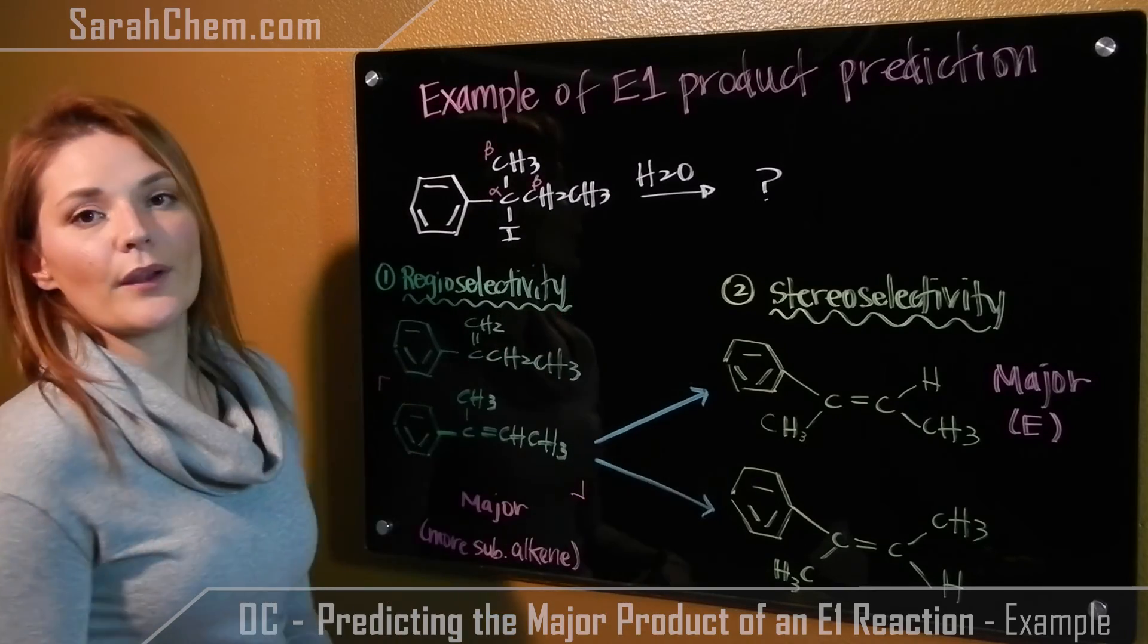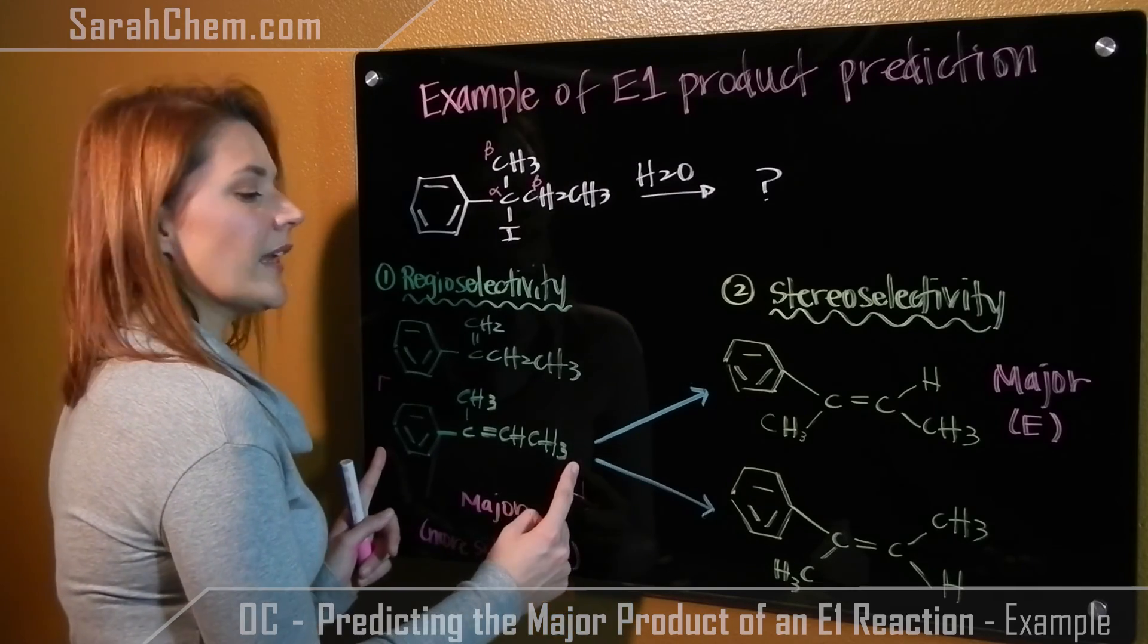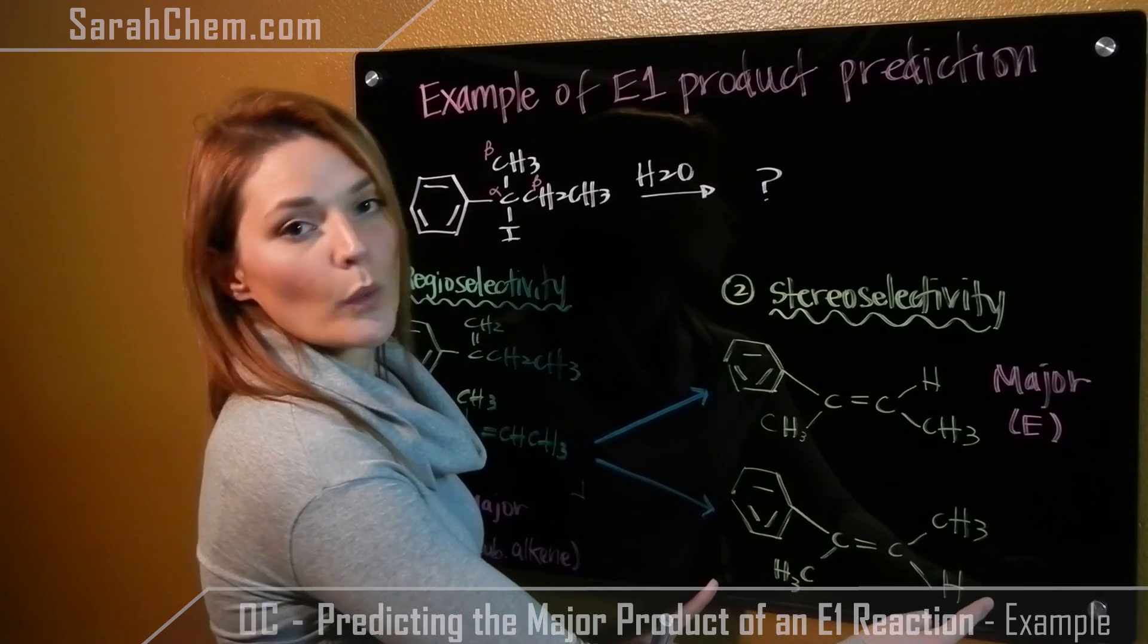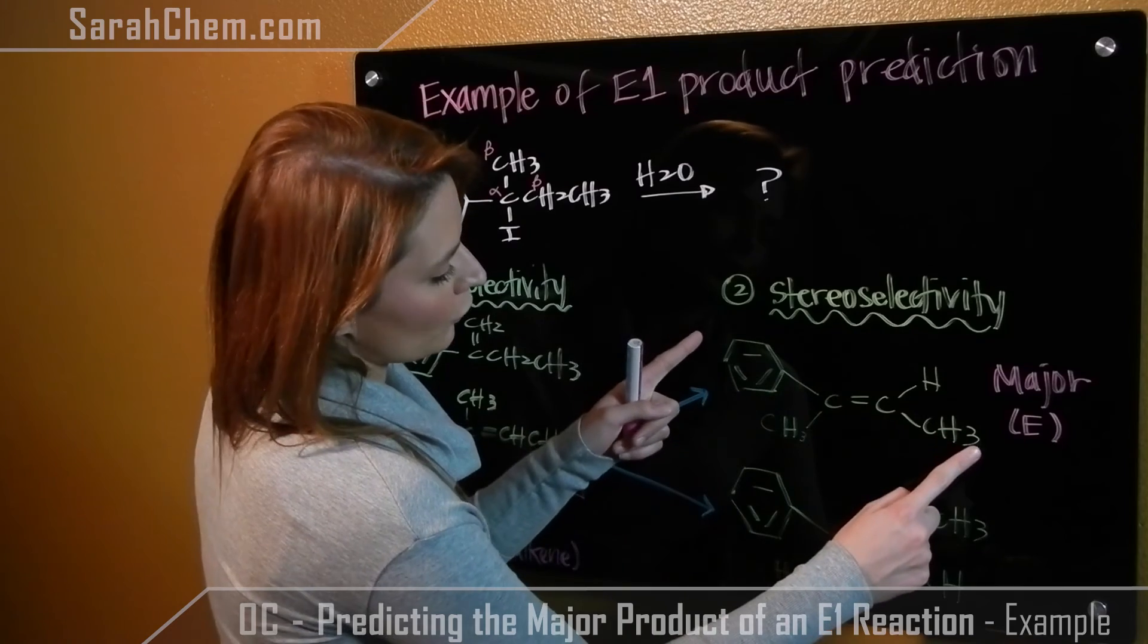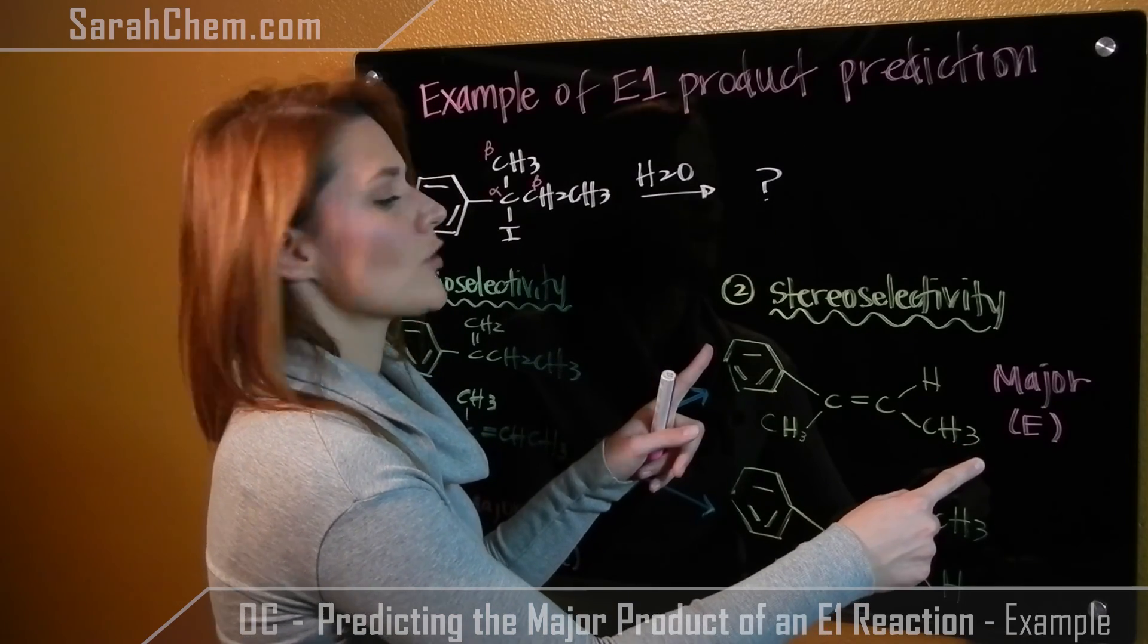The next thing now is the stereoselectivity. So I'll take this alkene as I have it, and I will draw its two possible conformations, the E isomer and the Z. We know that in an E1 reaction, the E isomer, where the bulkiest groups on either carbon are opposite one another, will always be the major product.